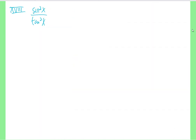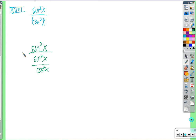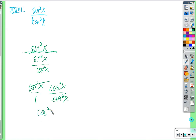Now: sine squared over tangent squared. Write in terms of sine and cosine — tangent squared is sine squared over cosine squared. Dividing by a fraction means multiplying by the reciprocal: sine squared over 1 times cosine squared over sine squared. Sine squared cancels, leaving just cosine squared x.